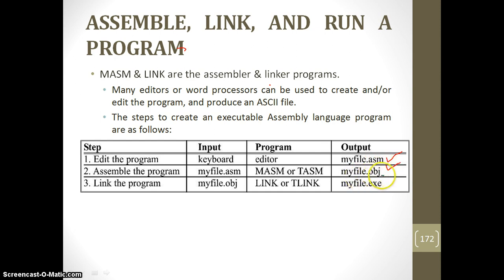Then from the binary object file, we need to create an executable format because we are working on the DOS operating system, which understands only executable files. We convert the object file to an executable file with the help of a linker. The assembly source file can be created using an editor — you can use the internal DOS edit editor.